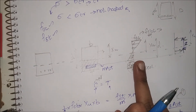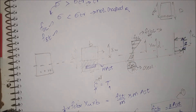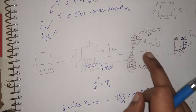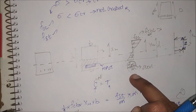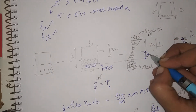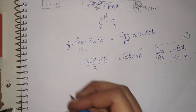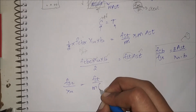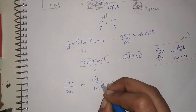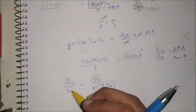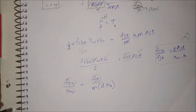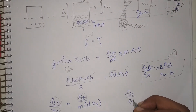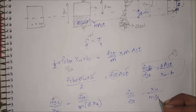Coming back to the stress diagram, since there are two triangles with similar triangle properties, we can use the similar triangles formula. FSC divided by XU equals (FST divided by M) divided by (D minus XU). Rearranging, FSC divided by FST equals XU divided by M times (D minus XU). Let this be Equation 2.